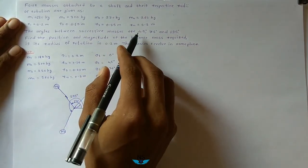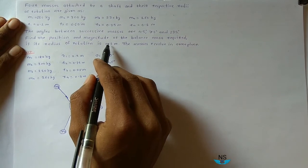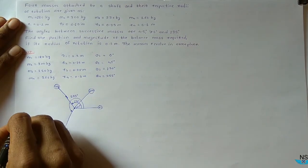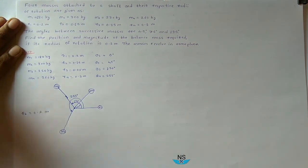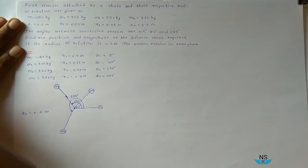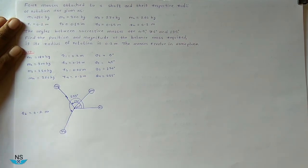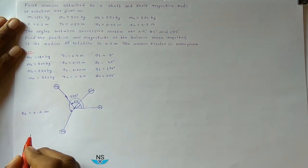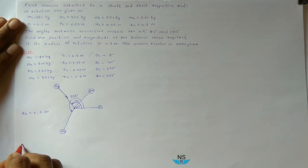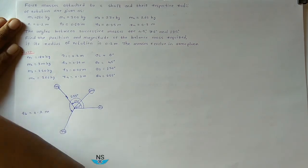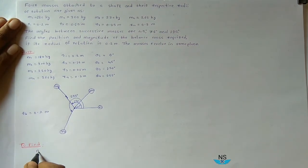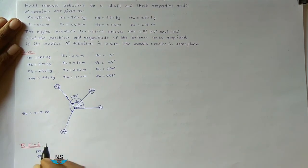The radius of rotation of the balancing mass is given: Rb is equal to 0.2 meter. We have to find Mb and their position theta_b — that is, we need to find Mb and theta_b.